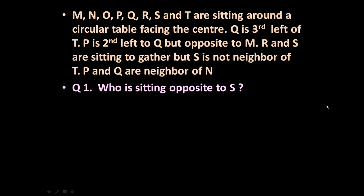The given problem is: M, N, O, P, Q, R, S and T are sitting around a circular table facing the center. Q is third left of T. P is second left to Q but opposite to M. R and S are sitting together but S is not a neighbor of T. P and Q are neighbors of N. The question is: who is sitting opposite to S?